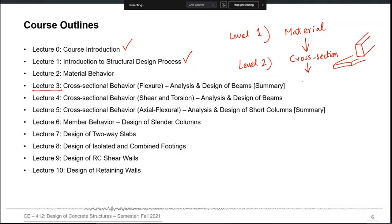Cross-sectional properties then manifest themselves at member level, which is Level 3. For example, when we talk about the rectangular cross-section of a beam, we are at the cross-section level — Level 2. But when we talk about the whole beam itself, considering its length and complete behavior, that beam behavior is at Level 3, the member level.